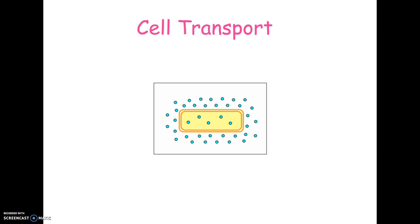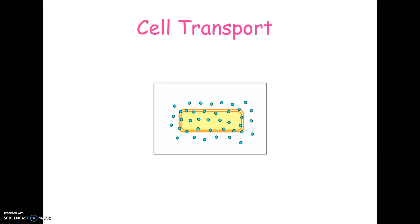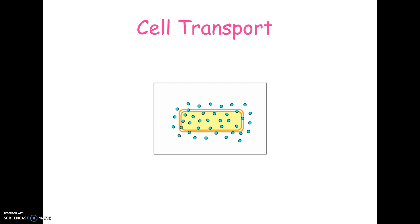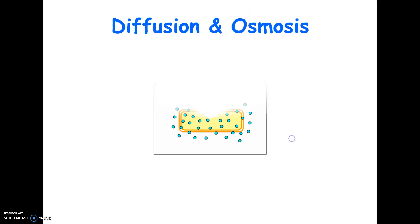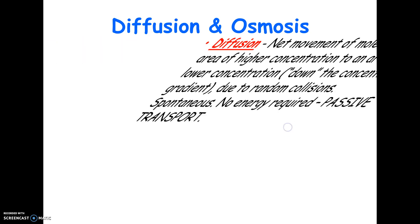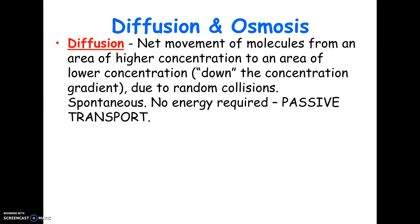Now we're going to focus on the functions of the membrane, particularly on transport — the movement of substances through the membrane. First, a couple of definitions. Diffusion is the movement of molecules from areas of high concentration to areas of lower concentration. That's called going down the gradient.